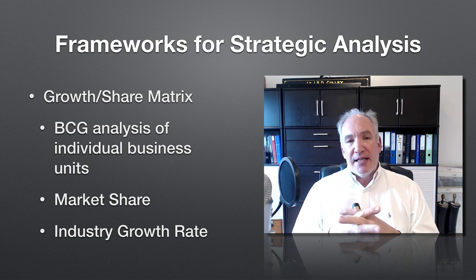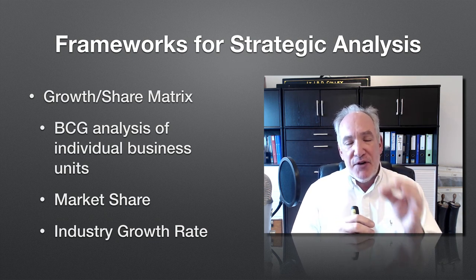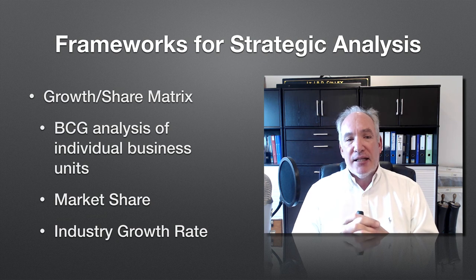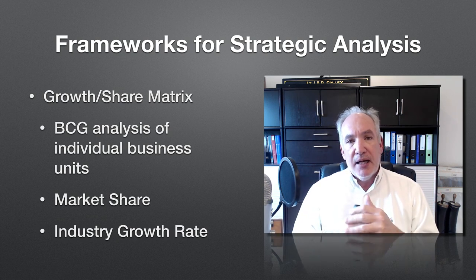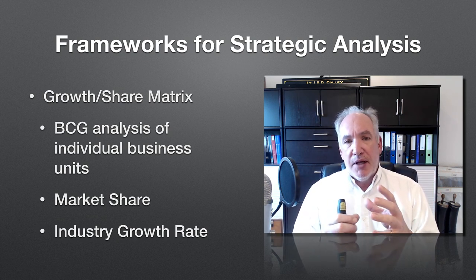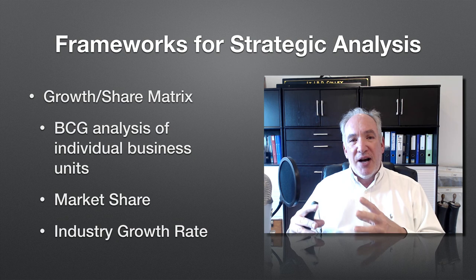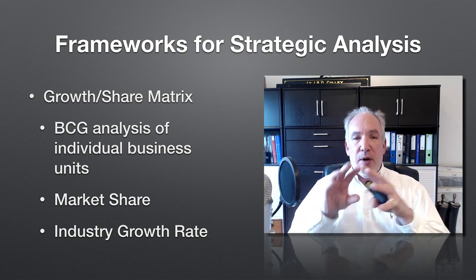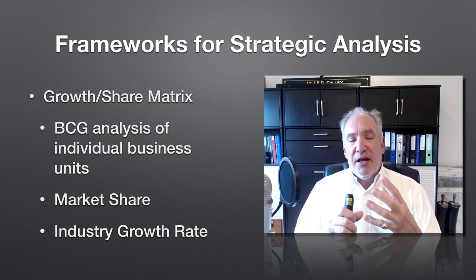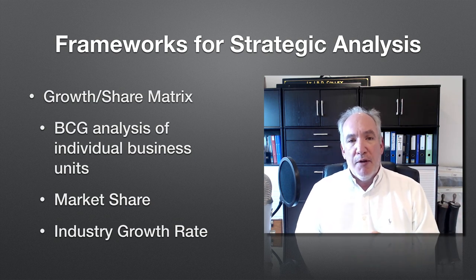The growth share matrix is a Boston Consulting Group grid — they like these four-square grids. At an individual business level, it looks at two axes: market share and industry growth rate. Market share is a measure of how competitive the business is in the market, and industry growth rate is a measure of how attractive that industry is. It helps you see where your businesses are positioned and make evaluations about which ones to reinforce with investment and which ones to pull investment back from.